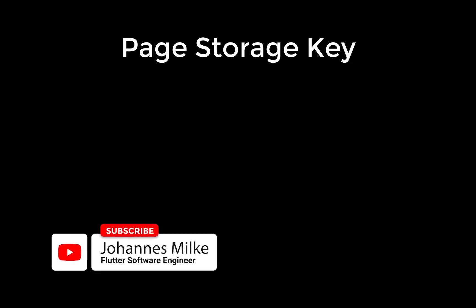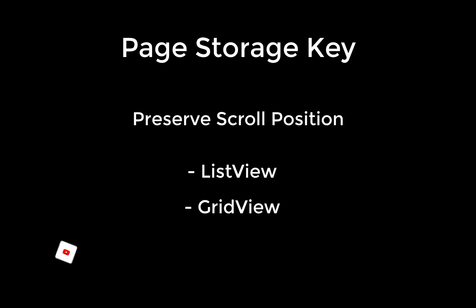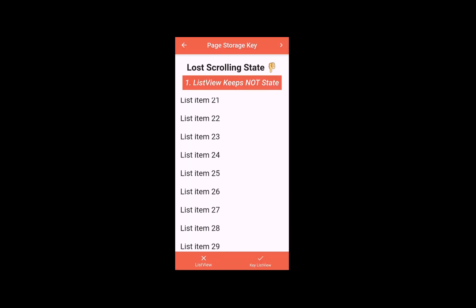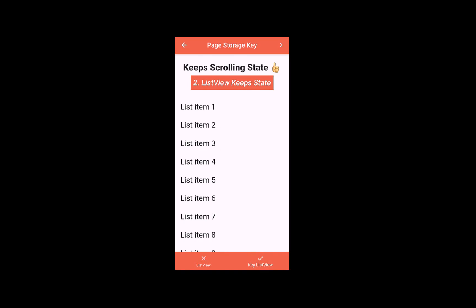The PageStorageKey is used to preserve the scroll position in list views, grid views, or any other scrollable widget. By default, the scrolling position is not preserved, which means if you scroll in a list view and then change the tab of your bottom navigation bar and come back to this previous page, the scroll position is not preserved.